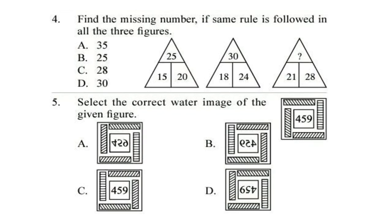Question 4. Find the missing number if same rule is followed in all the 3 figures. Look at the 3 figures. Correct answer is option A. 35. It's 7th table: 21, 28, 35.